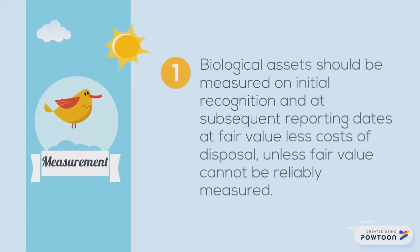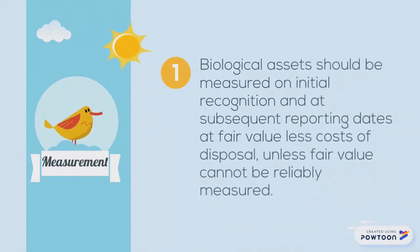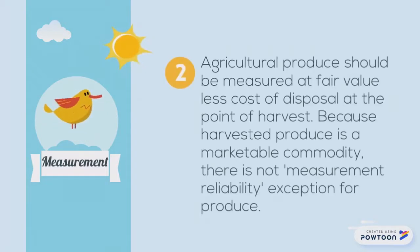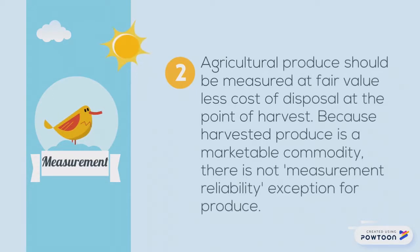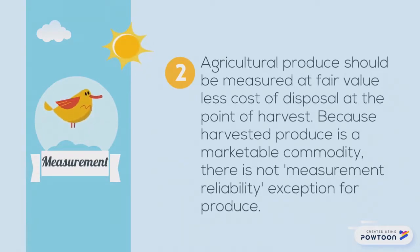Measurement: Biological assets should be measured on initial recognition and at subsequent reporting dates at fair value less cost of disposal, unless fair value cannot be reliably measured. Agricultural produce should be measured at fair value less cost of disposal at the point of harvest. Because harvested produce is a marketable commodity, there is no measurement reliability exception for produce.